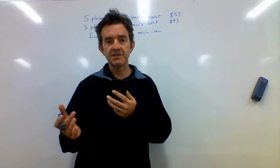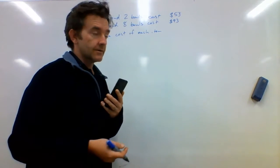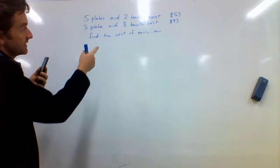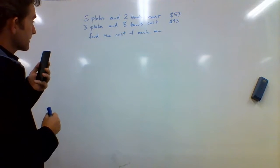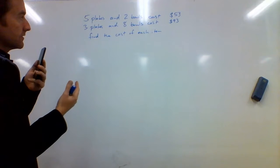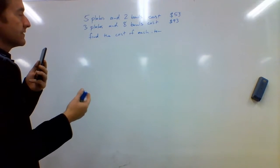I've got a very straightforward simultaneous equation problem to do on the board. Let's have a look at it. I've got 5 plates and 2 bowls costing $53 and 3 plates and 8 bowls costing $93. Find the cost of each item.